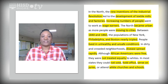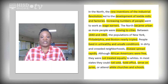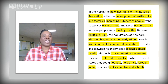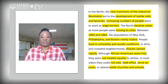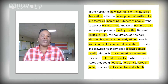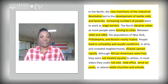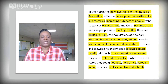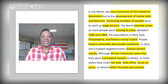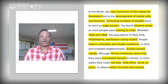In the North, the new inventions of the Industrial Revolution led to the development of textile mills and factories. Increasing numbers of people went to work as wage earners. The North became urban as more people moved to cities. Between 1840 and 1860, the populations of New York, Philadelphia, and Boston nearly tripled. People lived in unhealthy and unsafe conditions in dirty, crowded neighborhoods where disease spread rapidly. Although African Americans were free, they were not treated equally to whites. In most states, they could not vote, hold office, serve on juries, or attend white churches or schools.